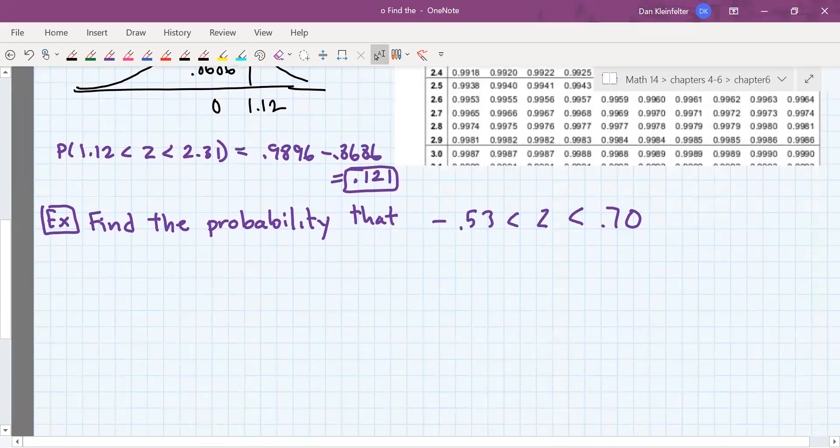Okay, so we have one more example. We want to find the probability that z will fall between negative 0.53 and positive 0.70.